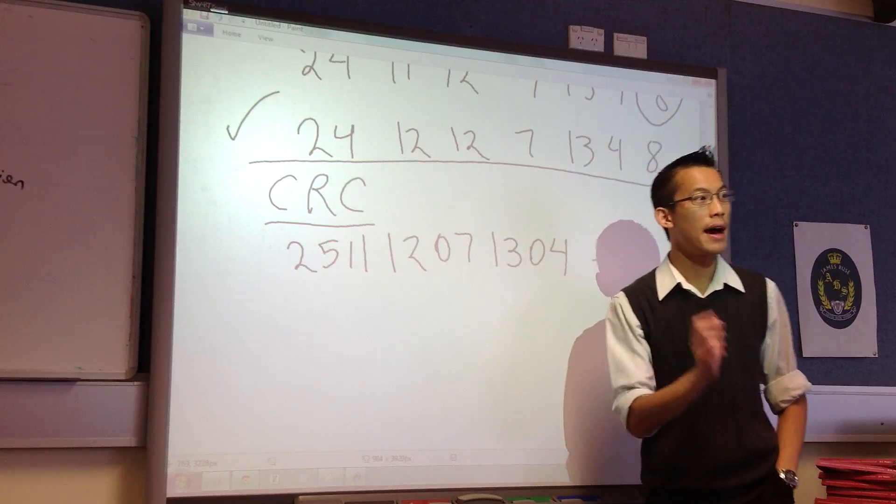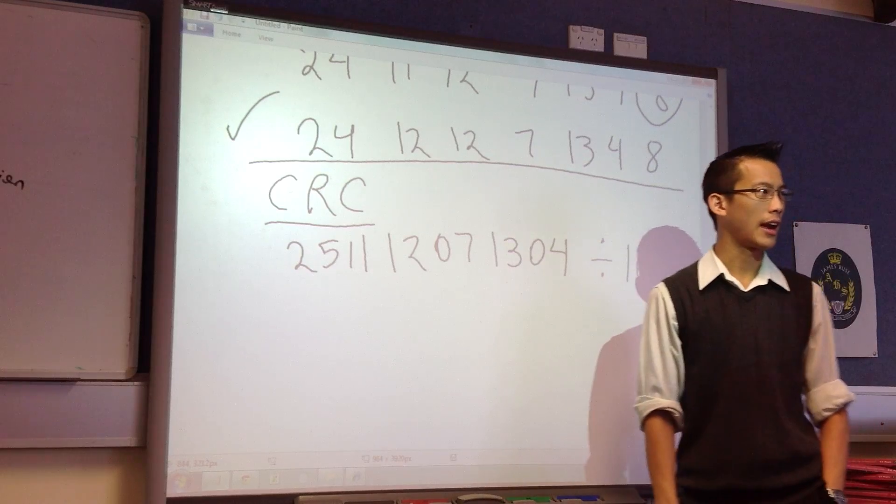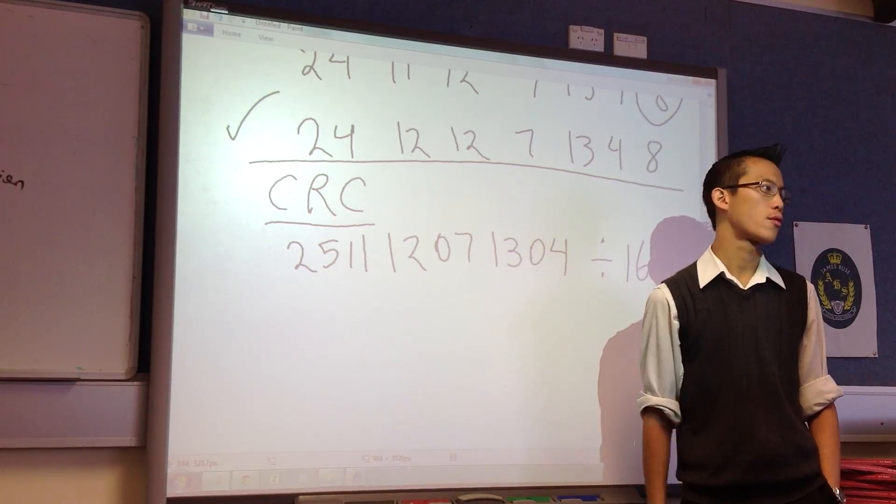So for instance, it might divide by, say, the same number we got before, 16. And again, it's going to look for a remainder.